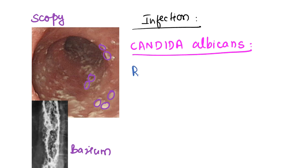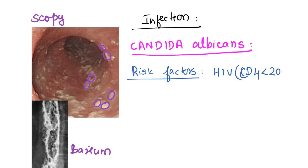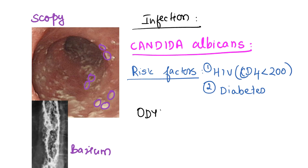Two important risk factors for the development of esophageal candidiasis to remember for exams: first is HIV infection — especially when the CD4 count is less than 200, development of esophageal candidiasis is very likely. Second is diabetes mellitus. Regarding clinical presentation, patients may have dysphagia, but a very characteristic finding is painful swallowing — odynophagia — which is very characteristic of esophageal candidiasis.